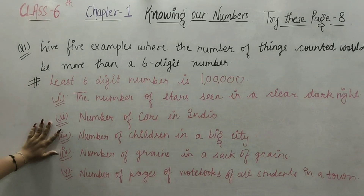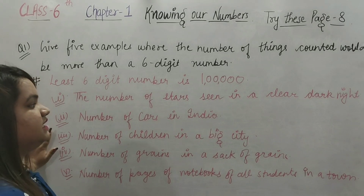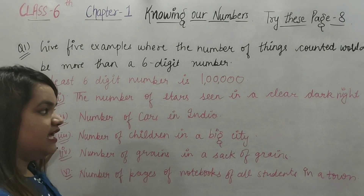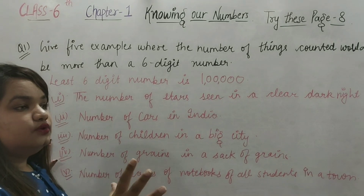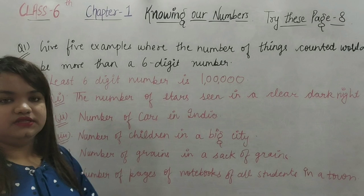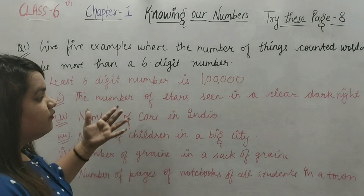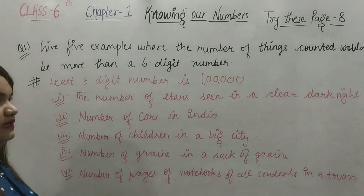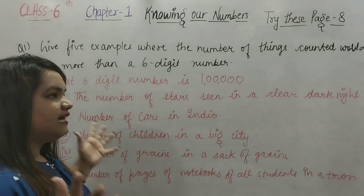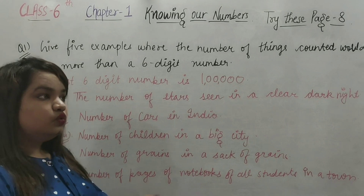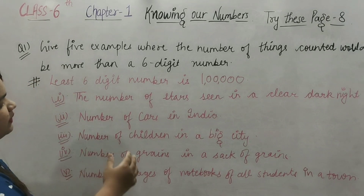Third example: the number of children in a big city. If you count children in a big city or a large age group, it will definitely be more than 1 lakh. Fourth example: the number of grains in a sack — grains are very many, more than 1 lakh. Fifth example: the number of pages of notebooks of all students in a town. If you count all the pages, it would definitely be more than 1 lakh.